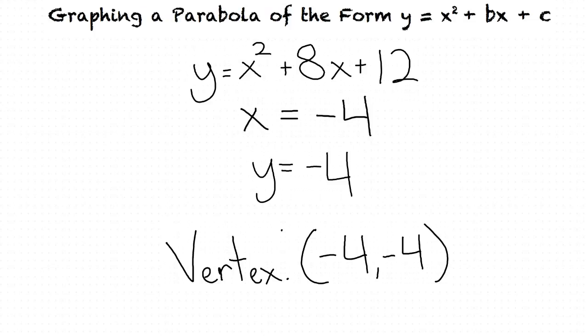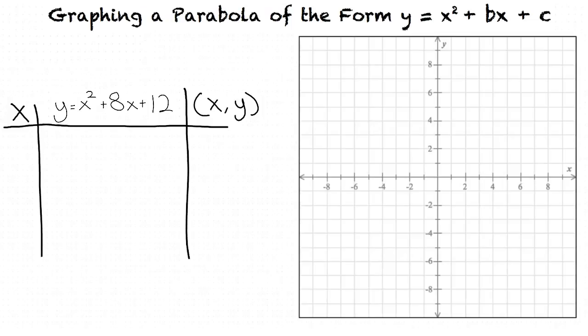We have found our vertex, but what steps will we use to graph our parabola? In order to find our graph, we are going to make a table of points that we will use to help plot our graph. We start off by picking two x values to the left of our vertex and two x values to the right of our vertex.